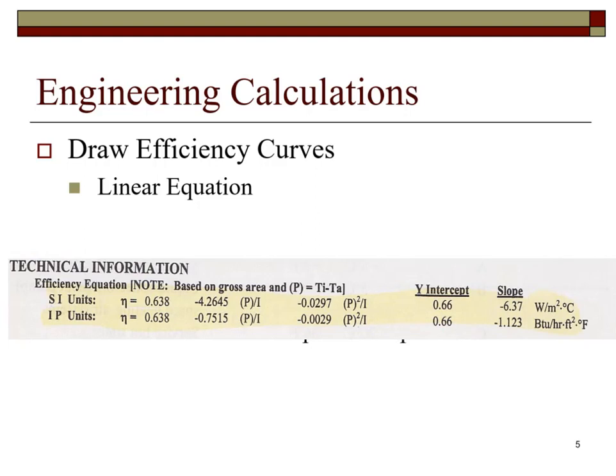This slide gives us an expanded view of the straight line approximating equation for the efficiency of this panel with respect to ambient temperature and solar radiation. The y-intercept or maximum expected efficiency of this panel is 0.66 or 66%.